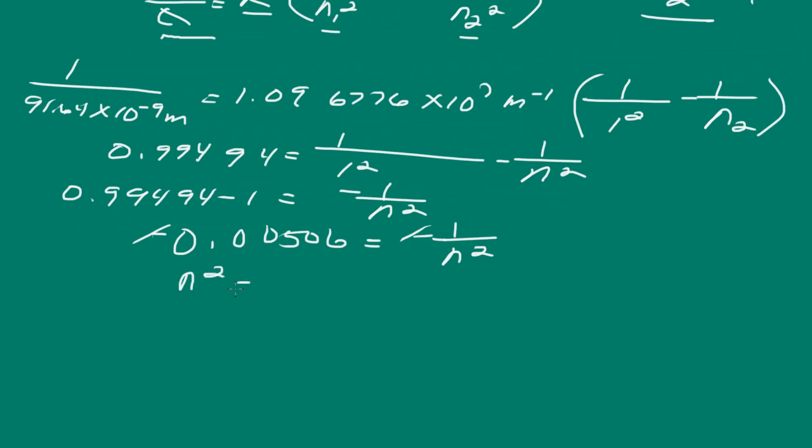So N squared is going to be equal to 1 over 0.00506. And what we want to do is we want to take the square root here of both sides. So N then is going to be equal to 14.